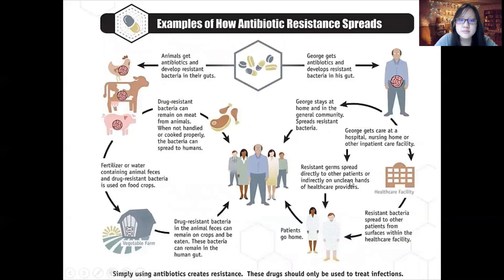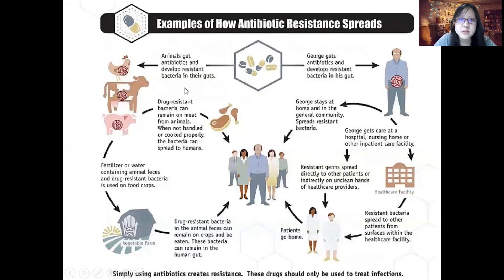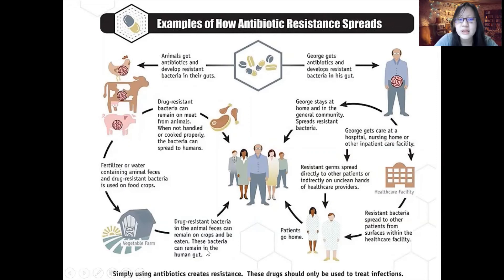Antibiotic resistance can spread widely through the community. A person who develops resistance can spread it to people at home, or in a hospital to other patients and healthcare workers who then carry it home. Animals injected with antibiotics can also develop resistant bacteria in their guts. Drug-resistant bacteria can remain on meat and spread when we eat it, or animal feces containing drug-resistant bacteria can be used on food crops that we then consume.